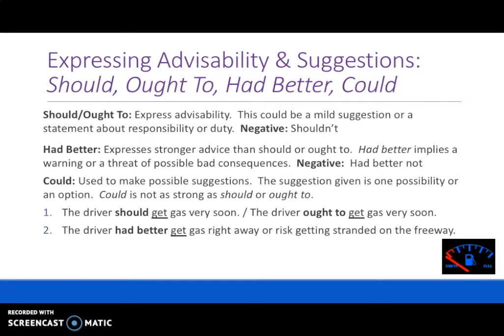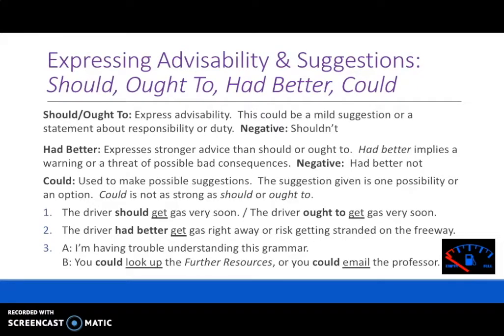Could is used to make possible suggestions. The suggestion given is one possibility or an option, so could is not as strong as should or ought to. For example: I'm having trouble understanding this grammar. You could look up the further resources, or you could email the professor. These are like options — they're suggestions, but more like possible options. It's not a very strong suggestion.